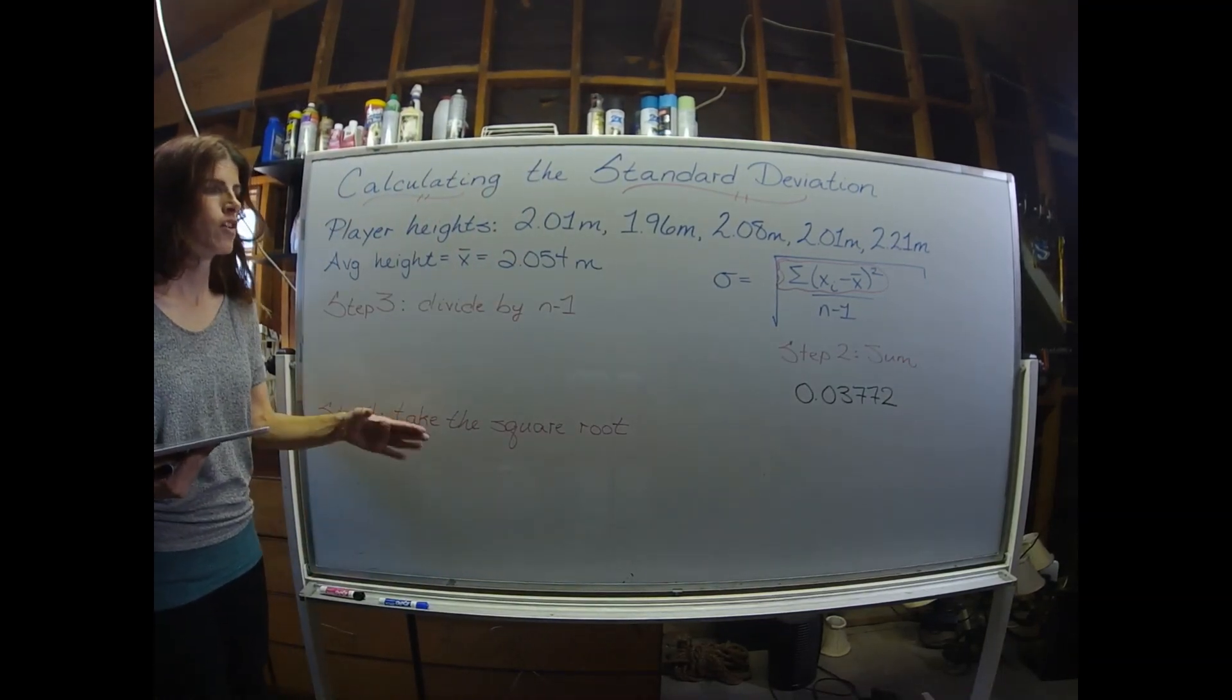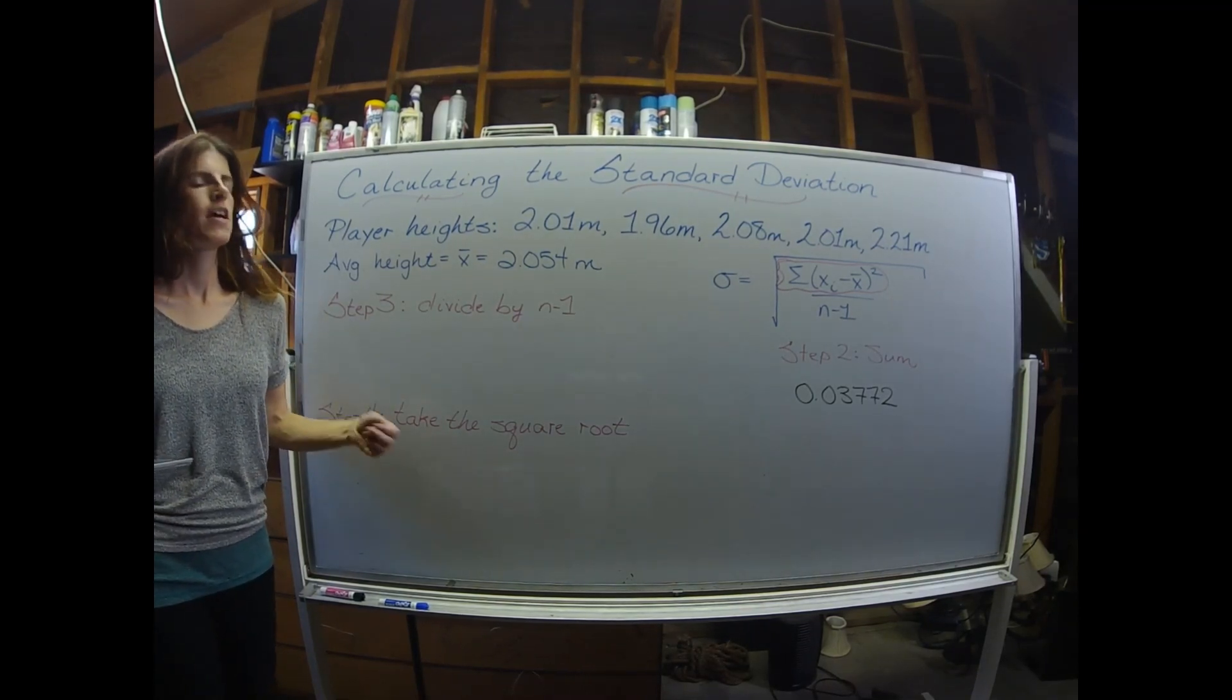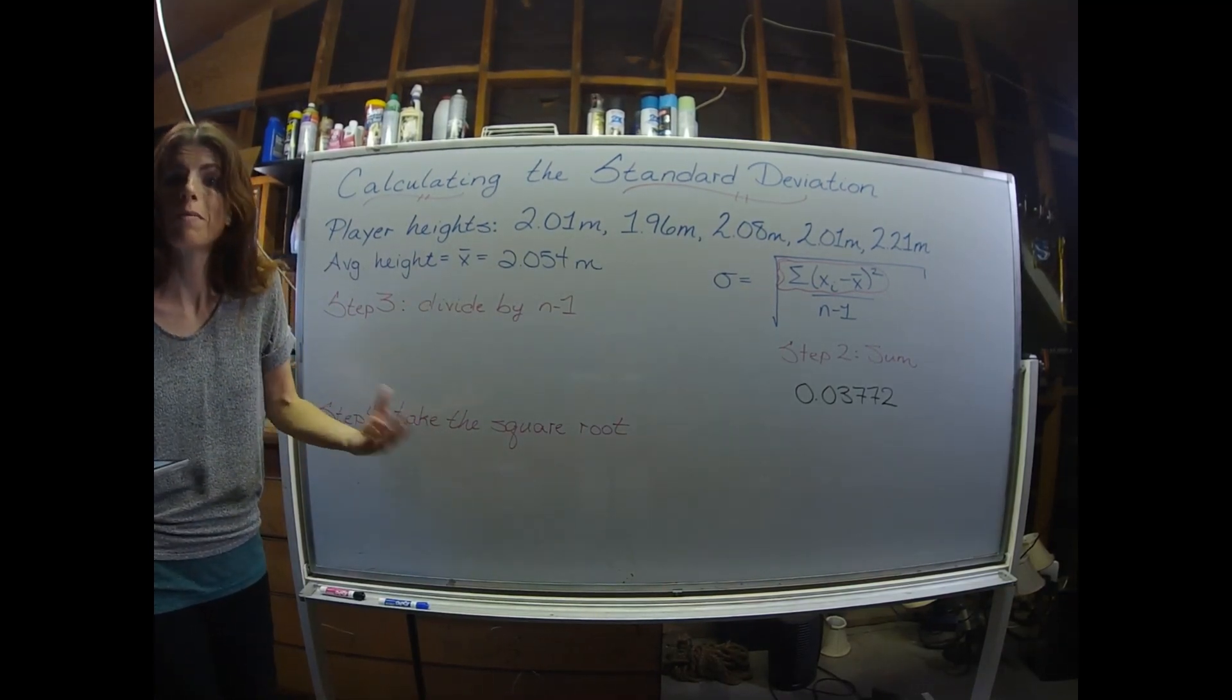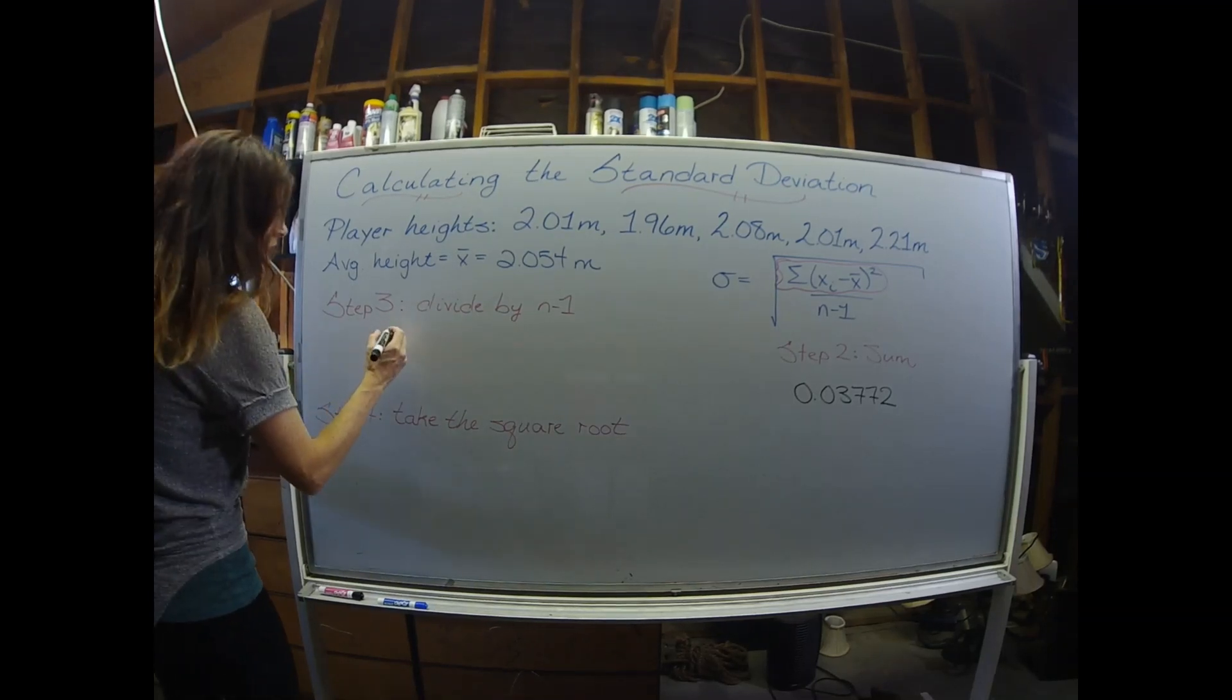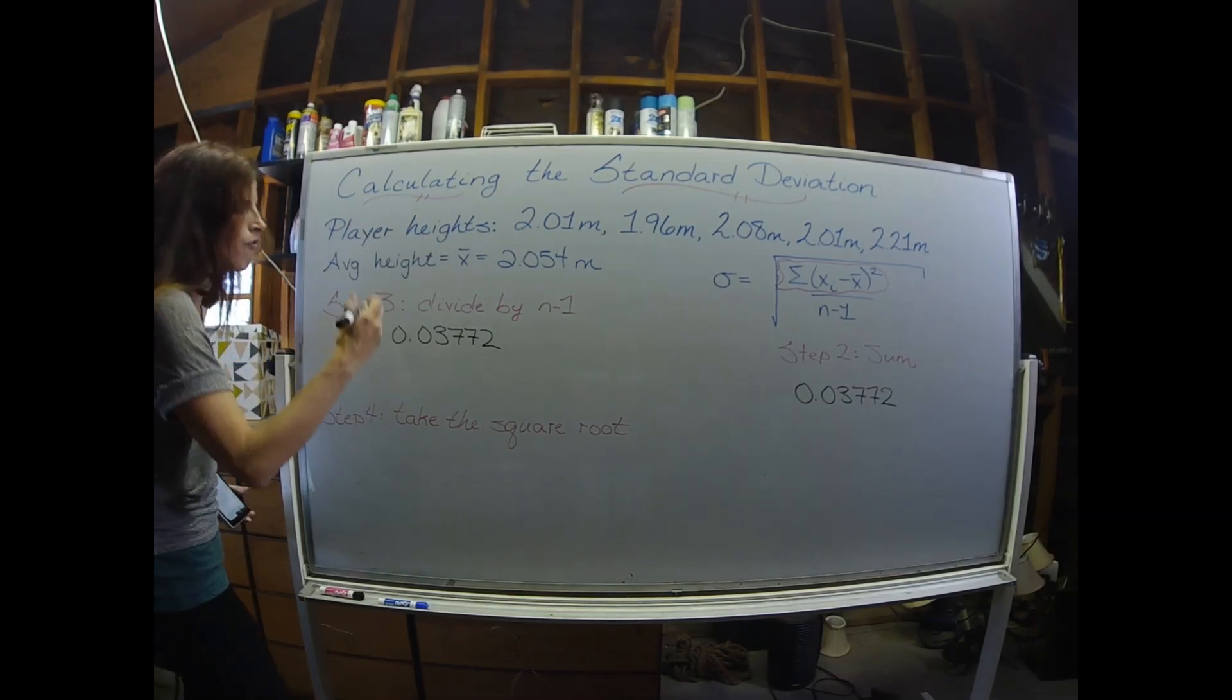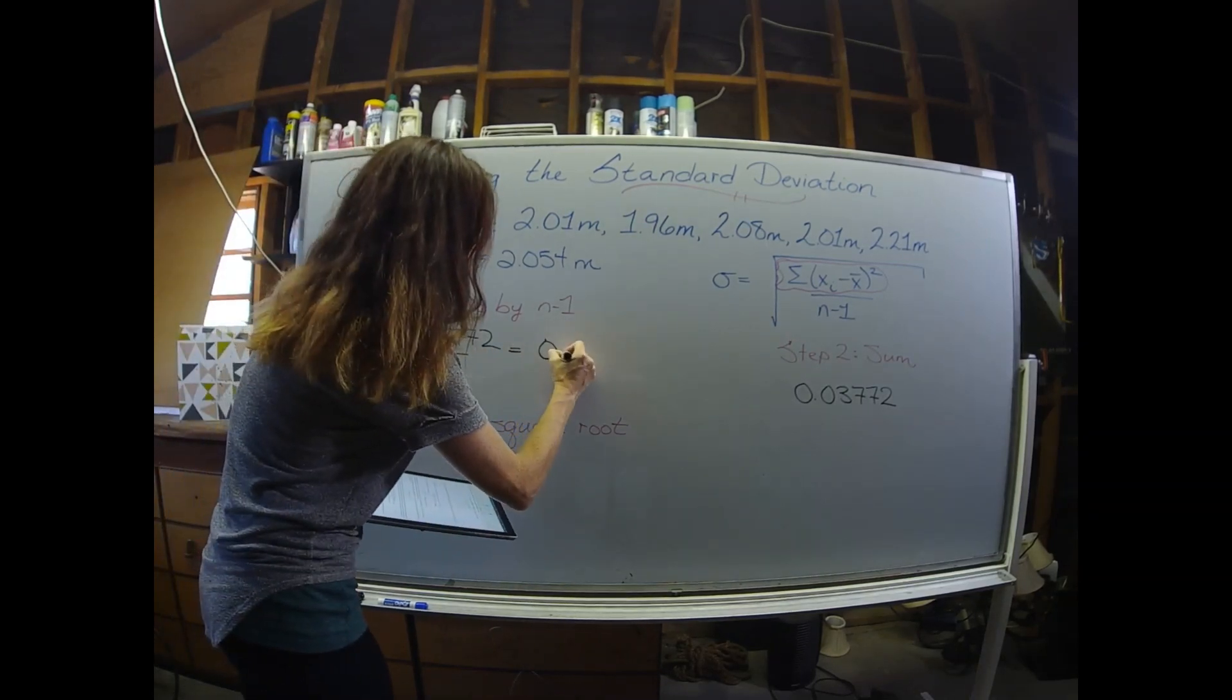In step three, we're going to take our sum and divide by n minus 1. Sometimes you see standard deviation formulas where they just divide by n. That's only acceptable if you have a really, really big sample set, often called a population. Since we only have five players, and this is typical of lab as well - you typically only have three, four, maybe five values - you're going to divide by n minus 1. So that's going to look like 0.03772, n represents the number in our data set. So 5, 5 minus 1 is 4. My sum divided by 4 gives me a value of 0.00943.